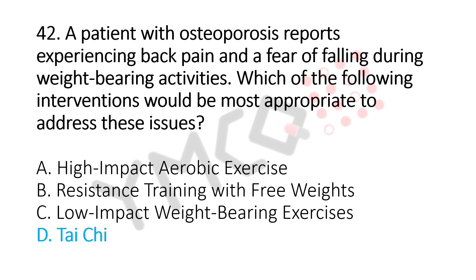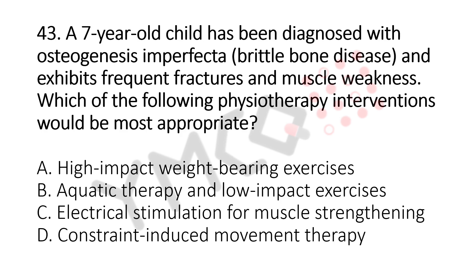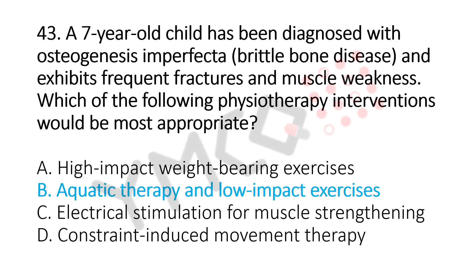Now let's move to question number 43. A 7-year-old child has been diagnosed with osteogenesis imperfecta, that's brittle bone disease, and exhibits frequent fractures and muscle weakness. Which of the following physiotherapy interventions would be the most appropriate? Option A, high-impact weight-bearing exercises. Option B, aquatic therapy and low-impact exercises. Option C, electrical stimulation for muscle strengthening. Option D, constraint-induced movement therapy. And the answer is Option B, aquatic therapy and low-impact exercises.